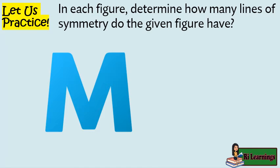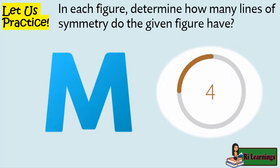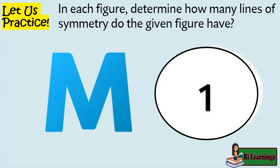Let us practice. Determine how many lines of symmetry the given figure has. I will give you 10 seconds to answer, and the timer starts now. And the answer is 1 — one vertical line of symmetry.